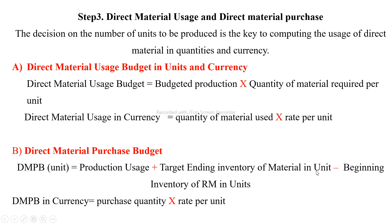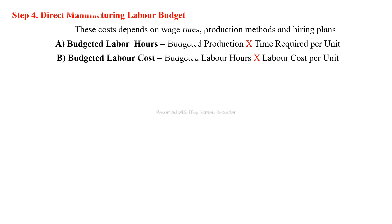The direct material purchase budget is calculated by taking the direct material needed for production, adding the target ending inventory of raw materials, and subtracting the beginning raw material inventory to determine how much must actually be purchased.